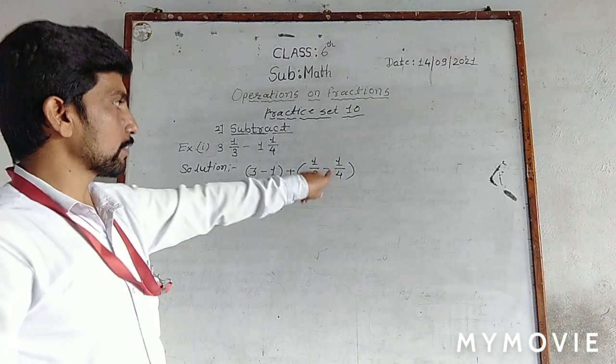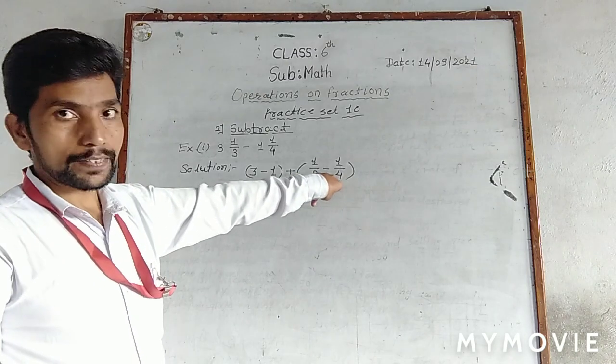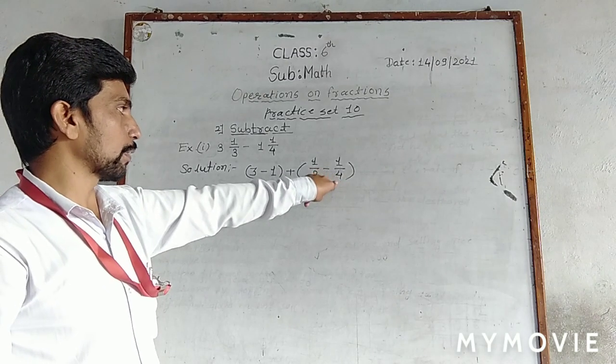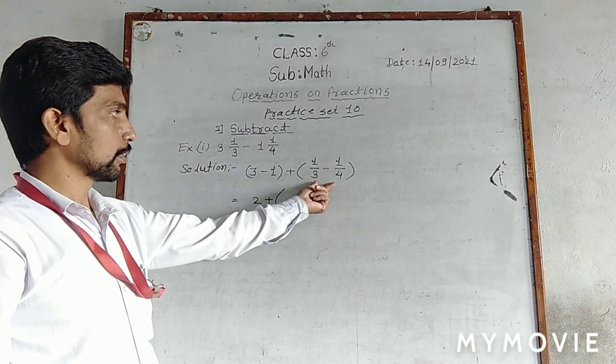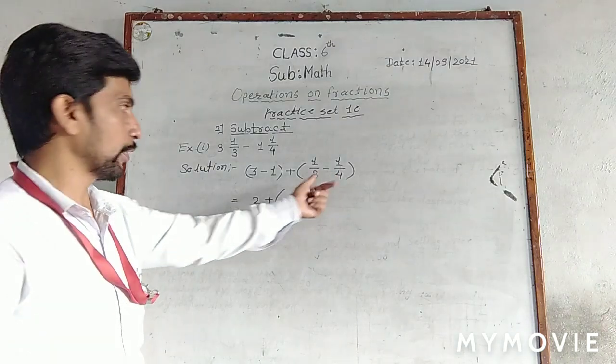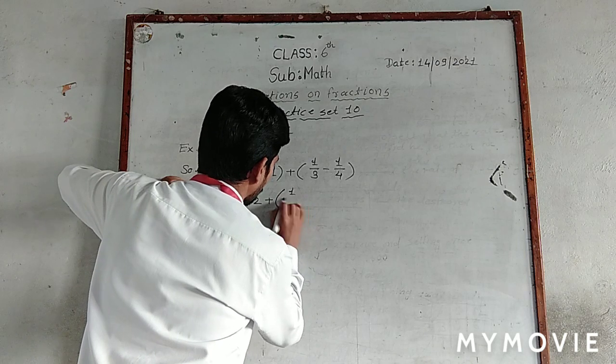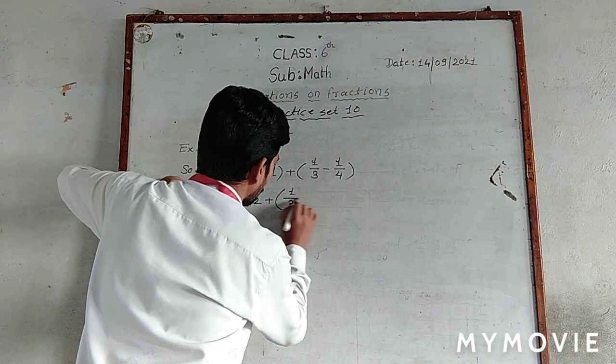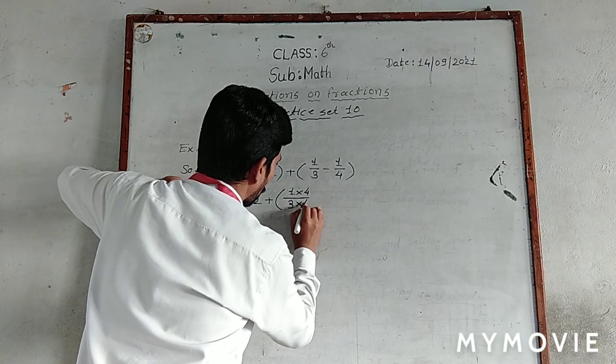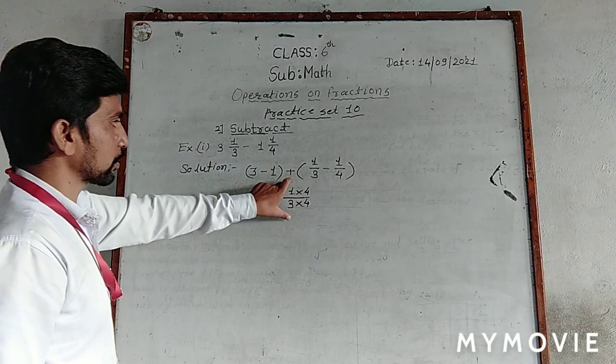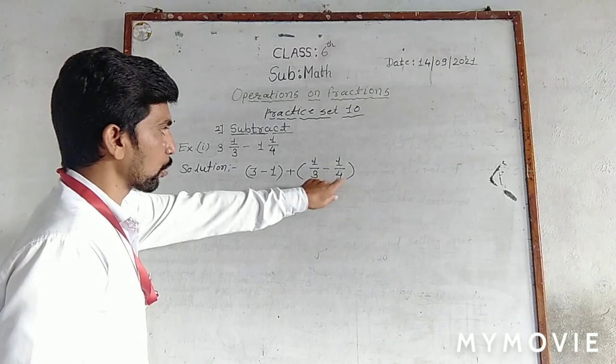The fractions have different denominators. The first fraction is one upon three. To find a common denominator, we multiply the first fraction, both numerator and denominator, by four.